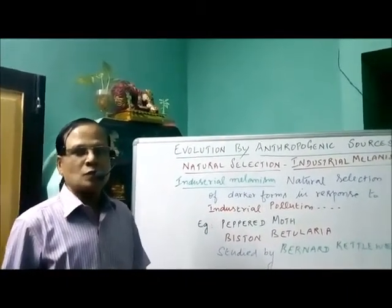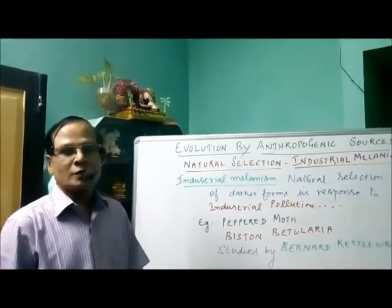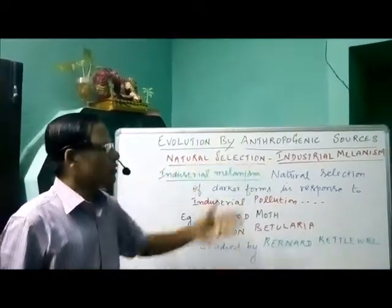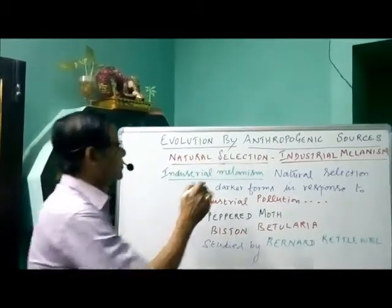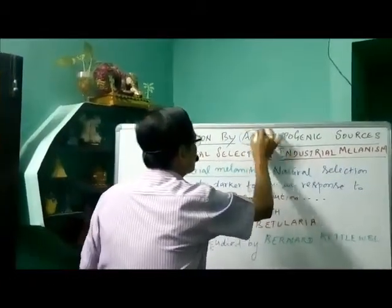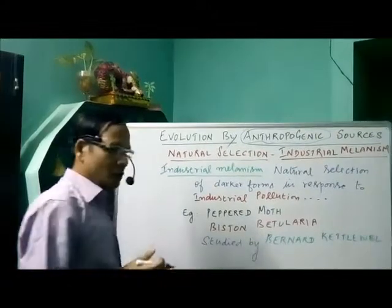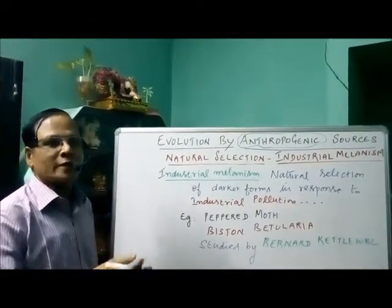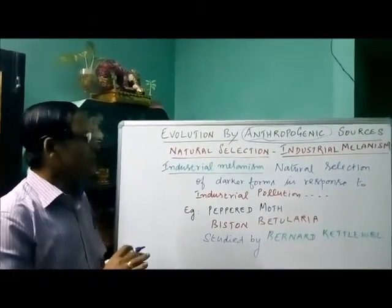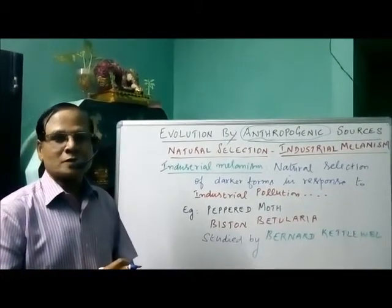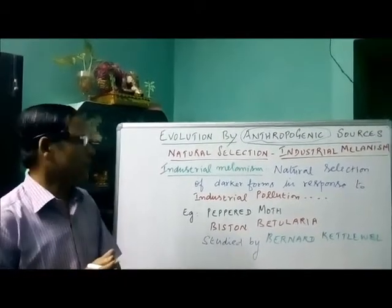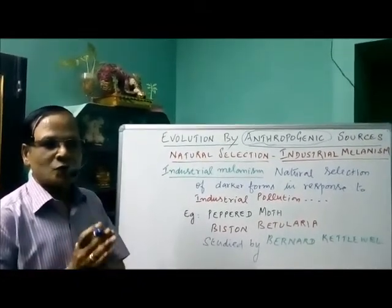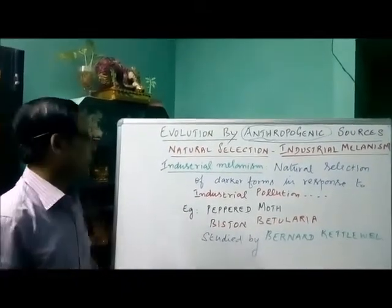Now we have to talk about anthropogenic evolution, or evolution by anthropogenic sources. Anthropogenic evolution means the evolution of new species because of human activities. In some cases, human activities have resulted in the formation of new species, and that is called anthropogenic evolution — evolution due to human activities.